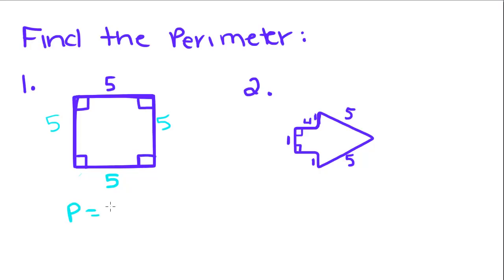To find the perimeter of this, we have 1, 2, 3, 4 sides at each measure of 5. So, we're going to take 4 times 5, and you get 20. So, when you find the perimeter of a square, the perimeter is equal to 4 times the length of one side, but that's only if it's a square.